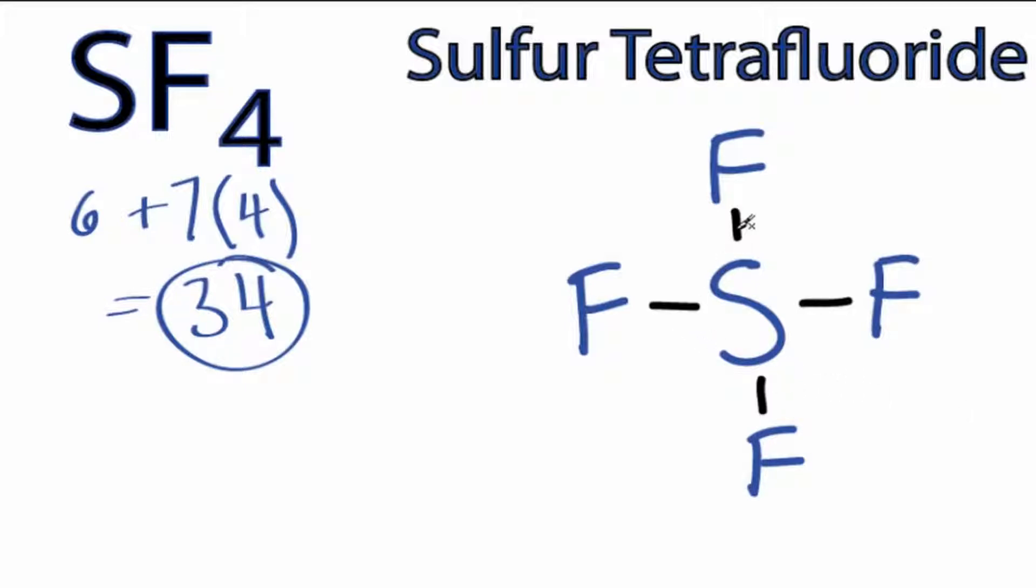And we've used 2, 4, 6, 8 valence electrons. Let's go around the outside, 10, 12, and 32, and we've filled the octets for everything and we have 2 valence electrons left over.